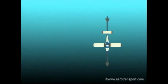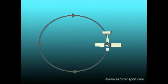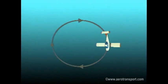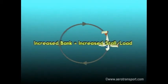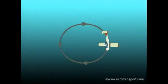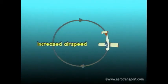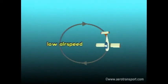Here are some basic principles of turns. At any given airspeed, the greater the bank the greater the rate of turn and the smaller the radius of turn. An increased bank also raises the stalling speed and increases the load factor. At a given angle of bank, increasing the airspeed lowers the rate of turn and increases the radius of the turn. To get the greatest rate of turn and smallest radius for a given bank angle, use the lowest possible airspeed for that angle of bank.